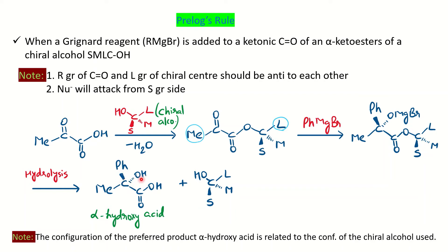The minor product has Ph below the plane and OH above the plane. Comparing with Cram's rule: in Cram's rule, the stereoselectivity is high because the chiral center is adjacent to the induced chiral center. But in Prelog's rule, the chiral center is two atoms away from the new stereo center — there is greater distance between the two stereocenters — so the stereoselectivity is less. For example, you may get roughly 55:45 (major:minor), compared to Cram's rule which gives about 80:20. You must maintain that the alkyl group of the ketonic carbon is anti to L, and the nucleophile follows the same stereochemistry as the small group of the chiral alcohol.